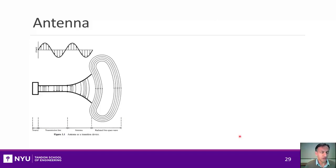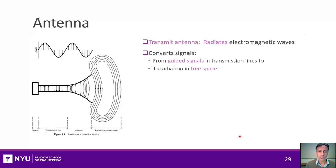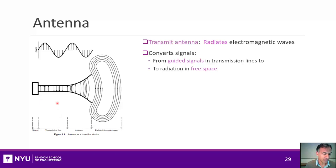Now that we know what a waveguide is, let's talk about antennas. A transmit antenna is any device that radiates electromagnetic waves. We can think about it as converting signals from guided signals in transmission lines to radiation in free space. So here we have a transmission line which feeds an antenna, and then it radiates into free space.